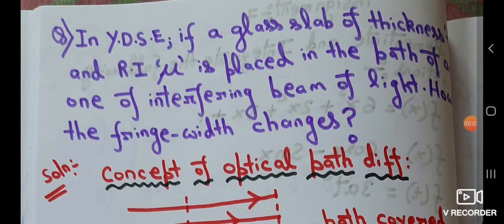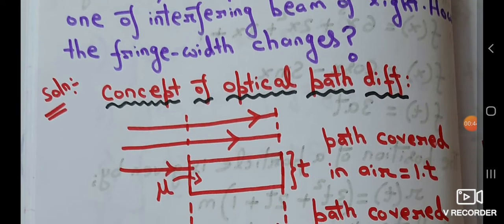Today we are going to study one important numerical from Young's Double Slit Experiment (YDSE). The question is: if a glass slab of thickness t and refractive index mu is placed in the path of one of the interfering beams of light, then how will the fringe width change? So you have two light waves, and if we place a glass slab in the path of one of them, how does that affect things? To solve this, we need to understand the concept of optical path difference.